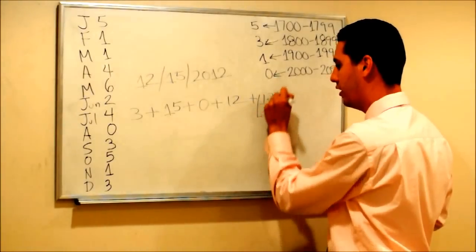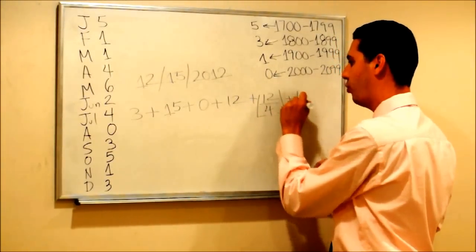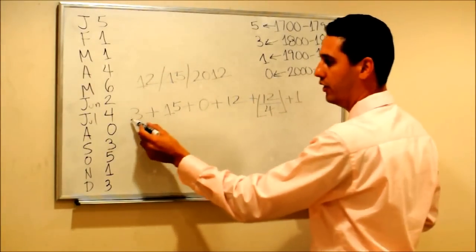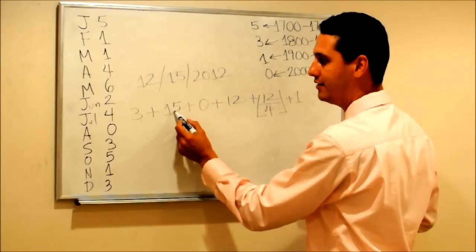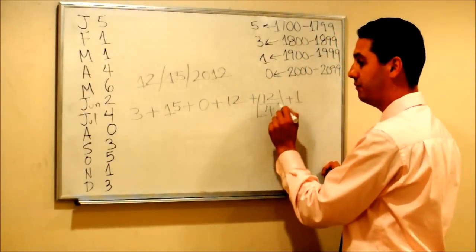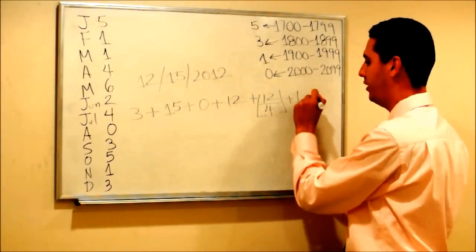Let's do the whole addition. 3 plus 15 is 18, plus 0 is 18, plus 12 is 30. This is 3, so 33 plus 1 is 34.